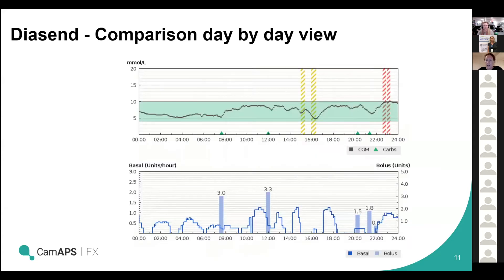One of the really helpful ways of reviewing this is through Diasend, which automatically uploads data whenever the phone is connected to Wi-Fi or has a sim card. One view we find particularly useful for closed loop is the day-by-day comparison view. It shows glucose values superimposed with the target range in the green shaded area, what's happening with the closed loop just below, and when manual insulin boluses are being given. There's a lot of information here and we tend to use this quite a lot in terms of adjusting settings and looking at patterns to see where things can be changed to get better outcomes.